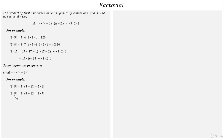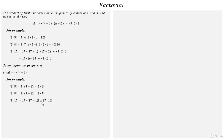Similarly, factorial 8 equals 8 into factorial (8-1), which equals 8 into factorial 7. And factorial 17 equals 17 into factorial (17-1), which is equal to 17 into factorial 16.